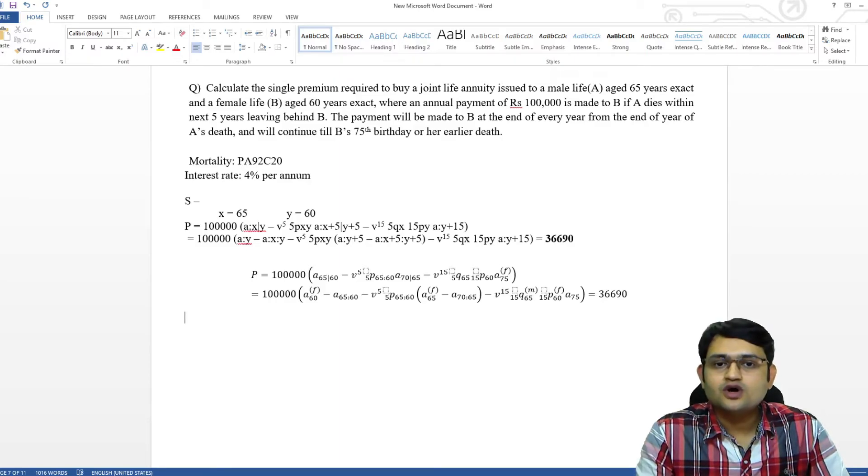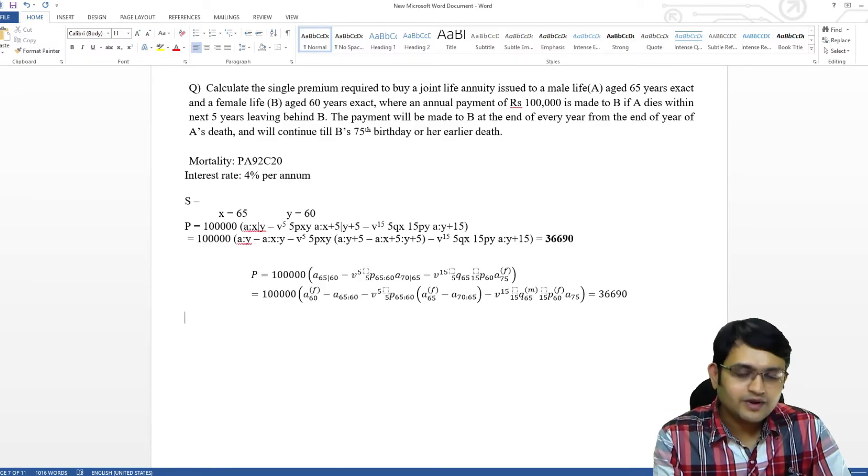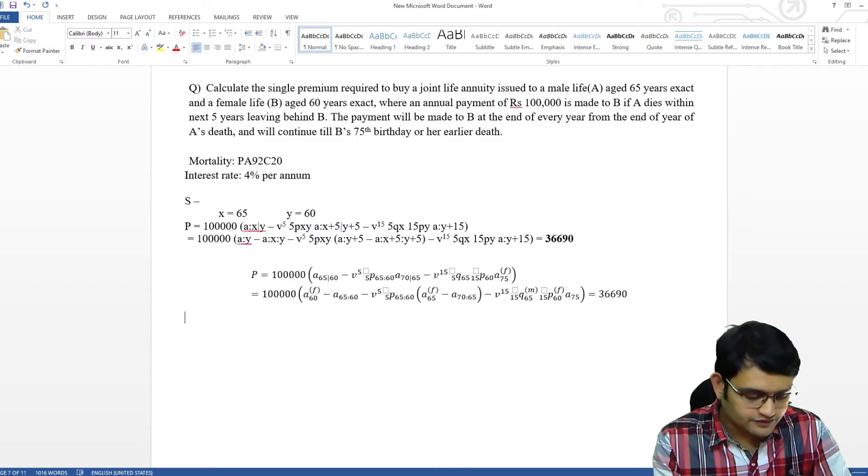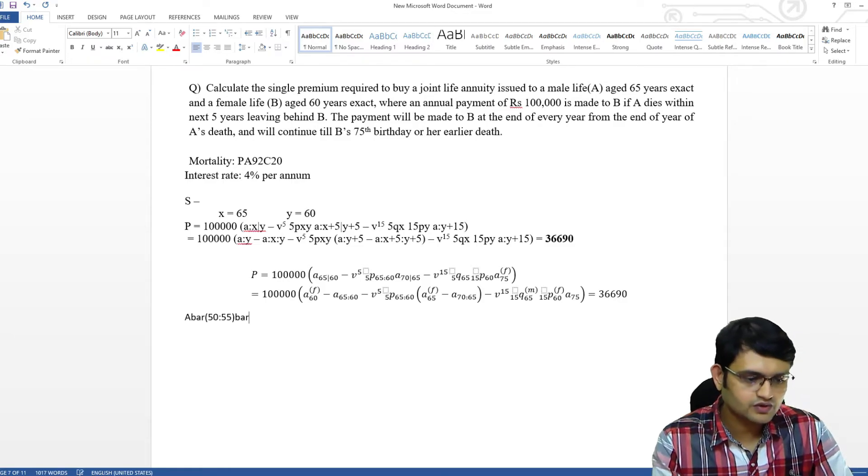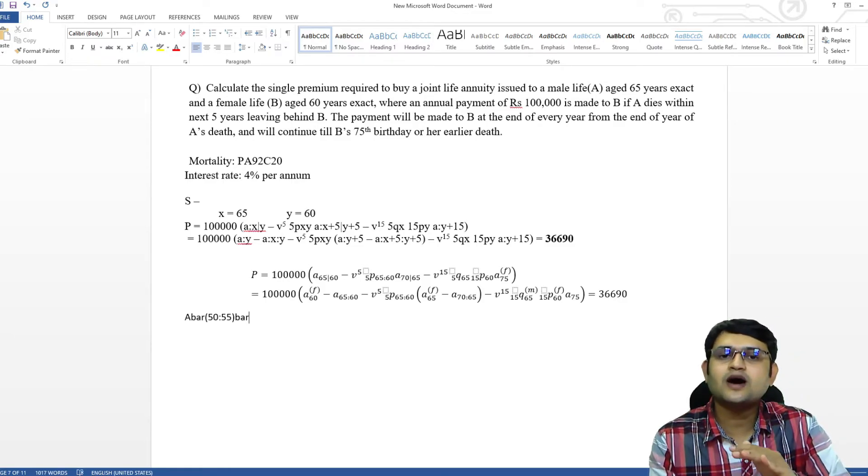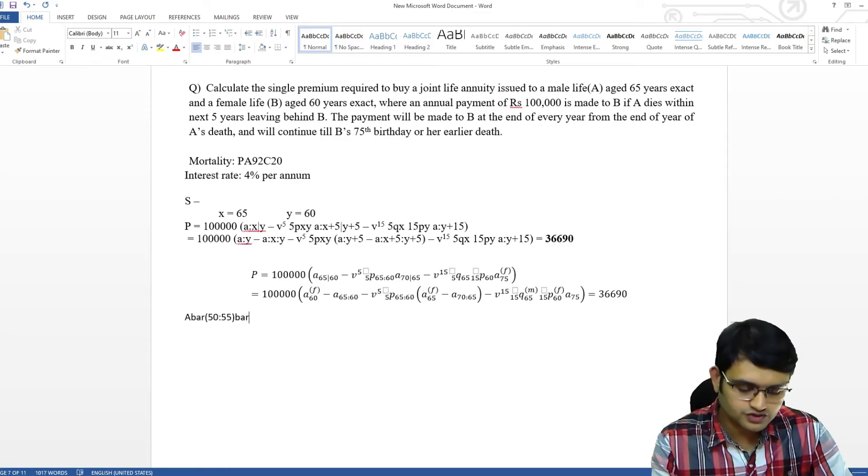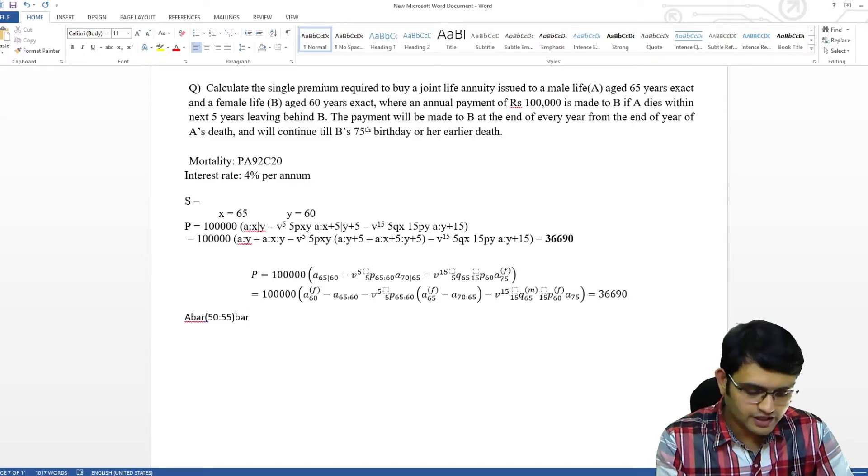In joint life, we may come across a question for payment immediately on death of last survivor. So, we will write A bar 50, 55 bar. That tells us that the bar is over 50, 55 both or using equation editor.